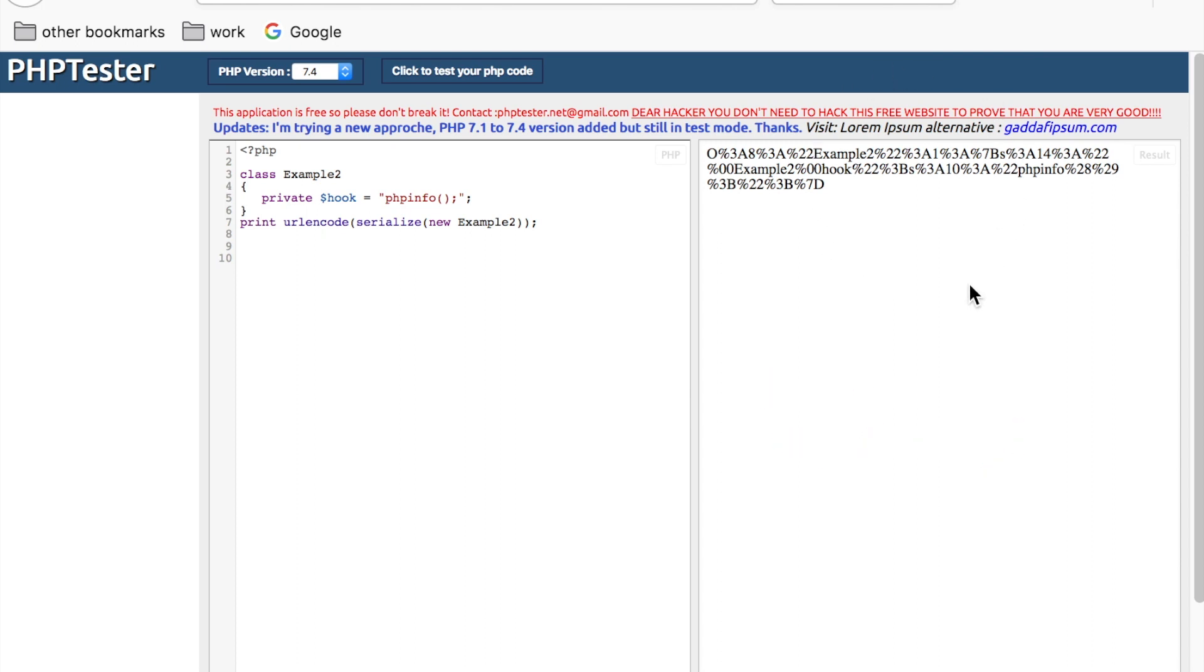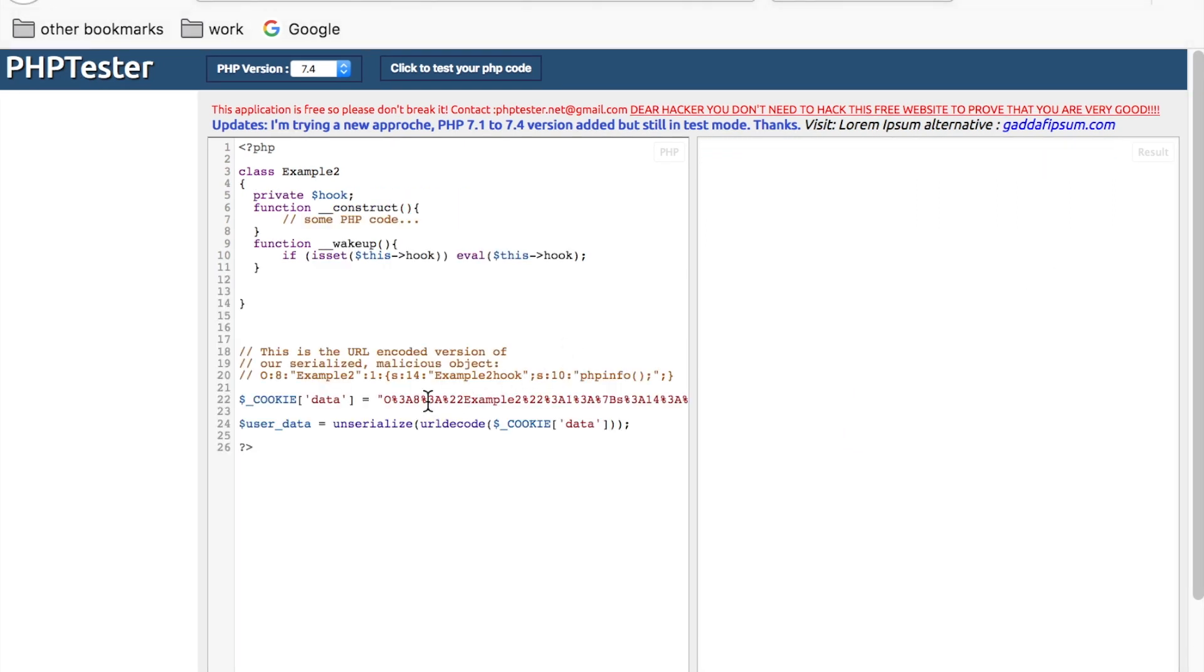Let's break this down a bit. Once you pass the serialized object into the program, this is what will happen in detail. First, you pass a serialized example2 object into the program as the data cookie. The program calls unserialize on the data cookie.